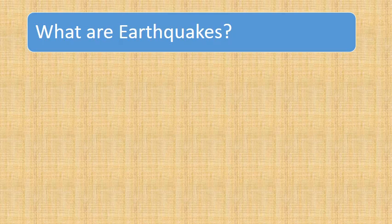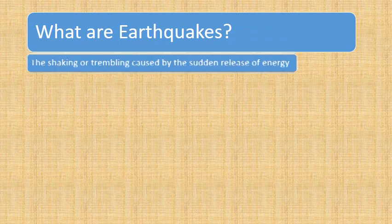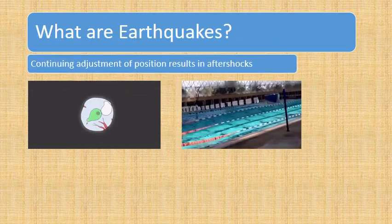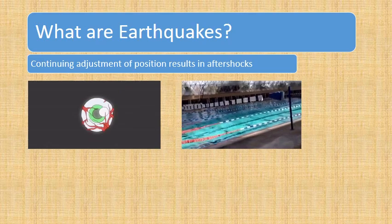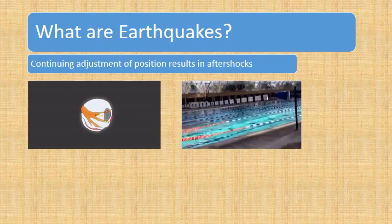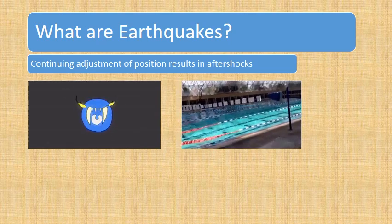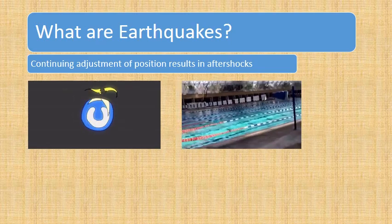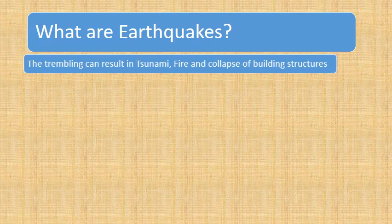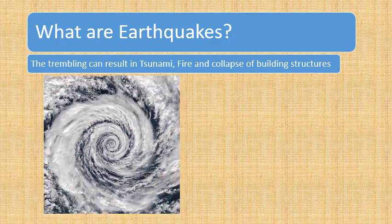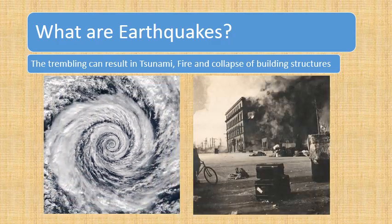First of all, I'll tell you what earthquakes are. Earthquakes are basically the shaking or trembling caused by the sudden release of energy. Aftershocks are continuing adjustments of position and also cause earthquakes. This trembling can result in tsunami, fire, and collapse of building structures.